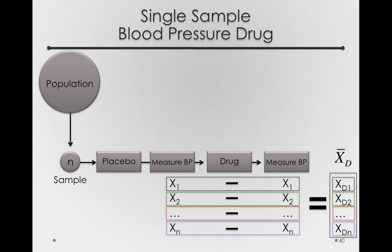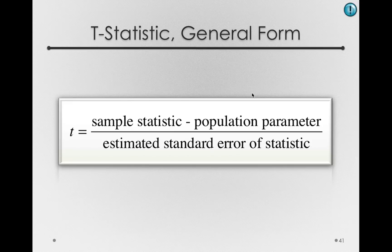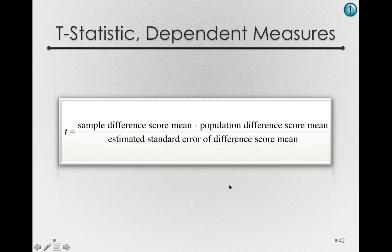This results in difference scores for each individual, and it's the average difference score we're concerned with — the average amount that individuals differed between the placebo and the actual drug. Let's see how we can use our t statistic to work with these data. Here's our t statistic in the general form: we always have our sample statistic minus a population parameter divided by the estimated standard error of the statistic. In this case, the t would equal the sample difference score mean minus the population difference score mean, divided by the estimated standard error of the difference score mean.